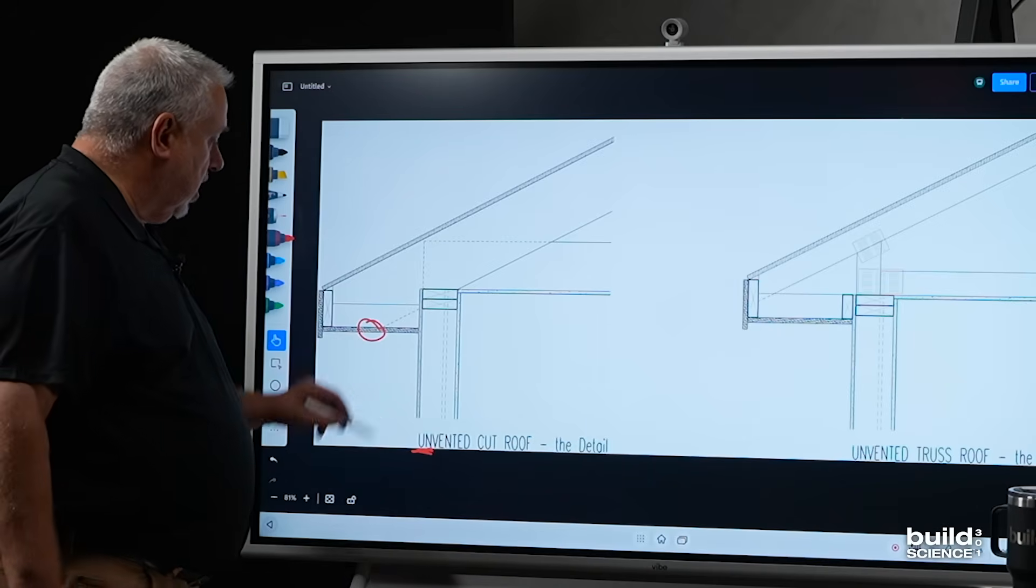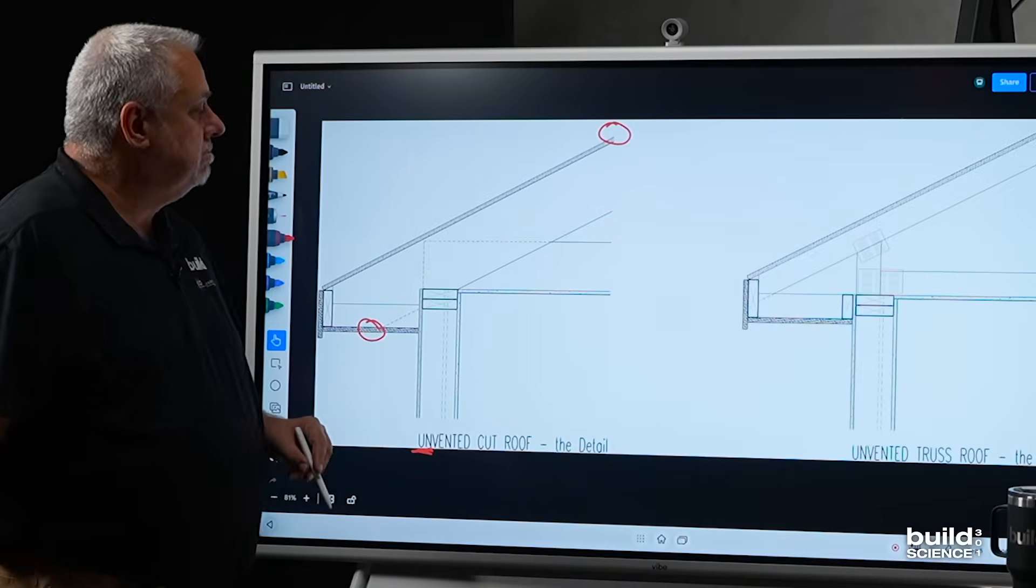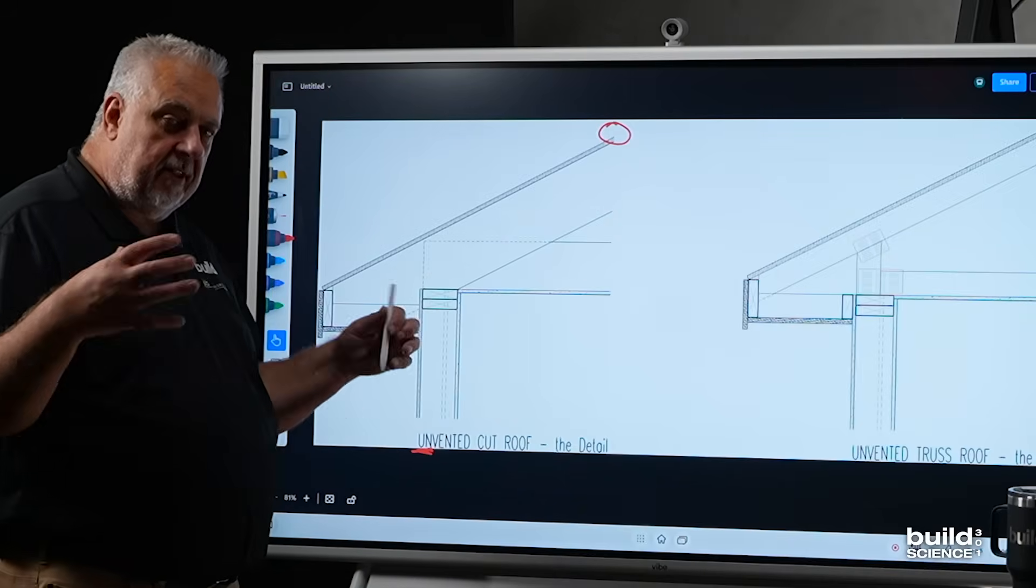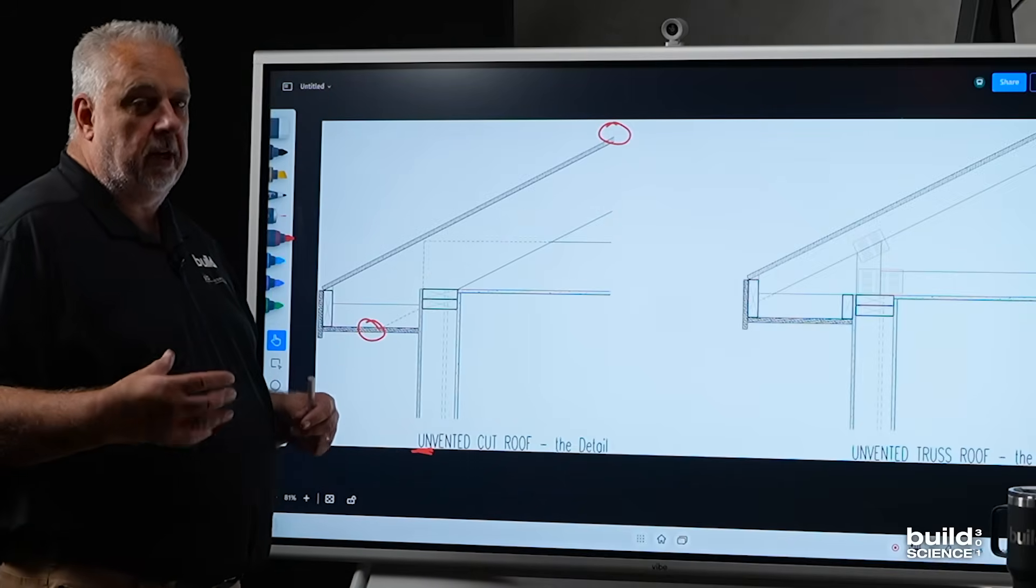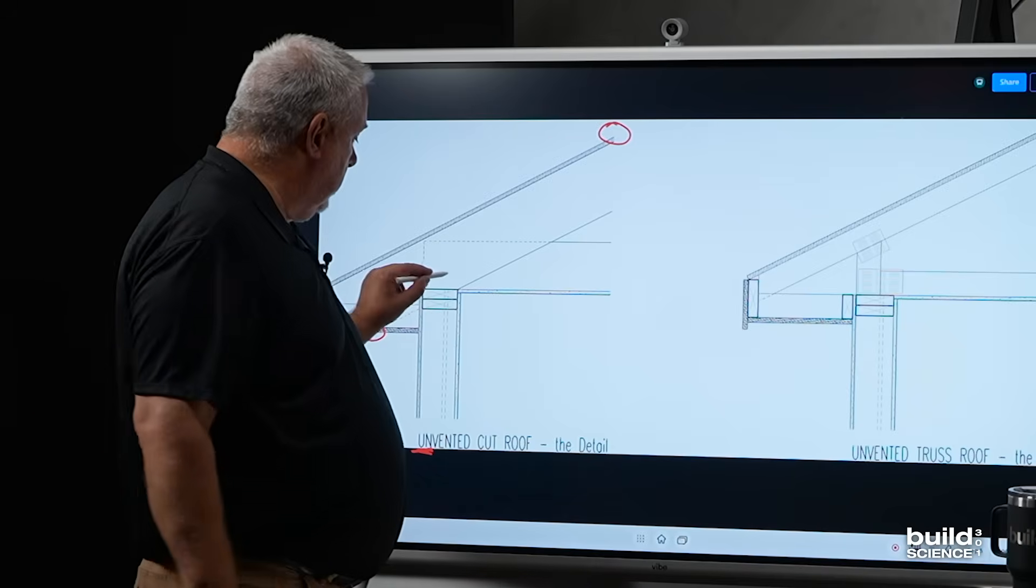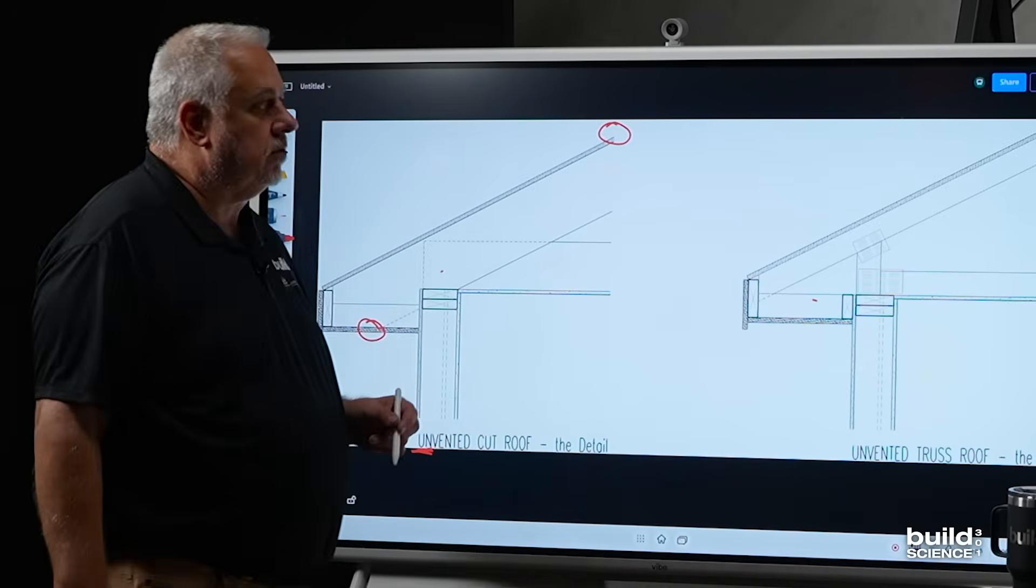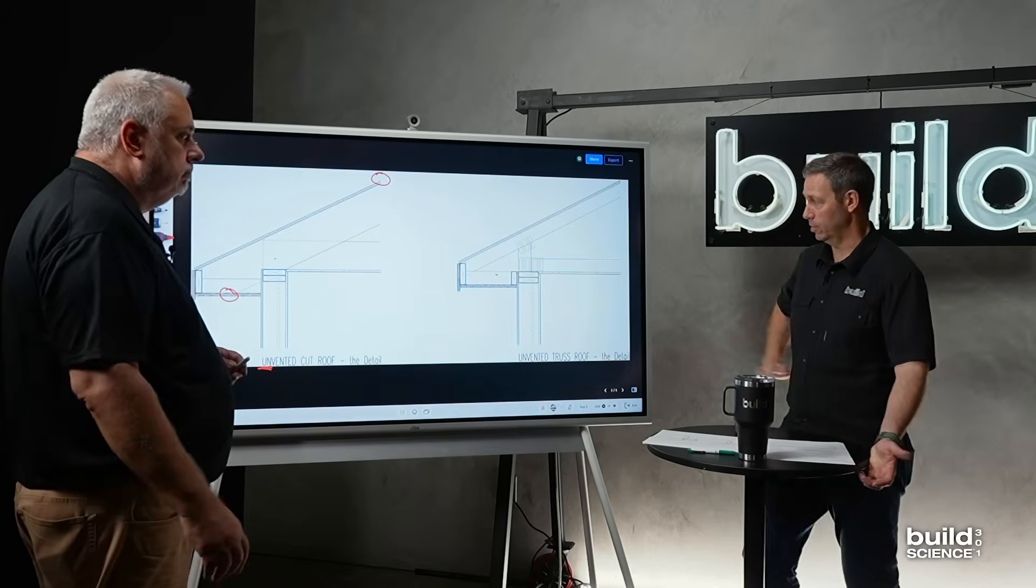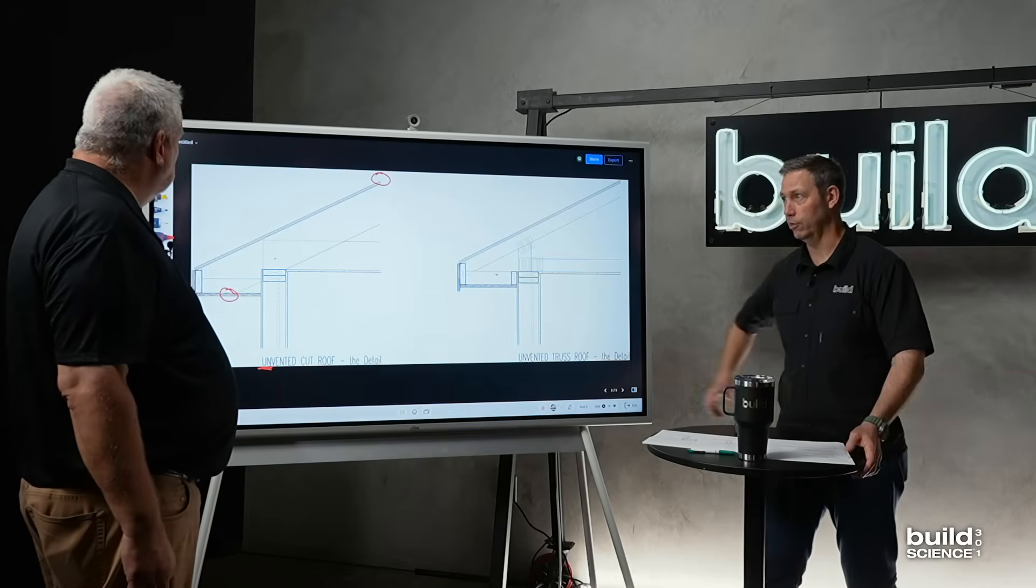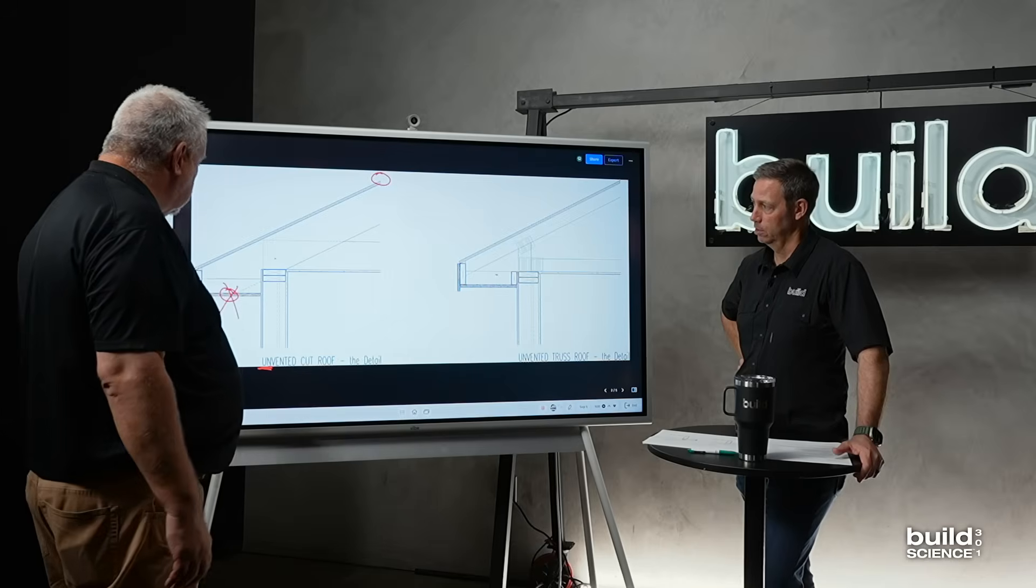We don't really care about a ridge vent. We have to solve for everything basically internally. Nothing's being released out to the atmosphere, whether it is a cut roof or it is a truss roof. I mean, it looks like the same drawing in the last episode, minus a slightly different soffit. At this stage, just that vent is gone.